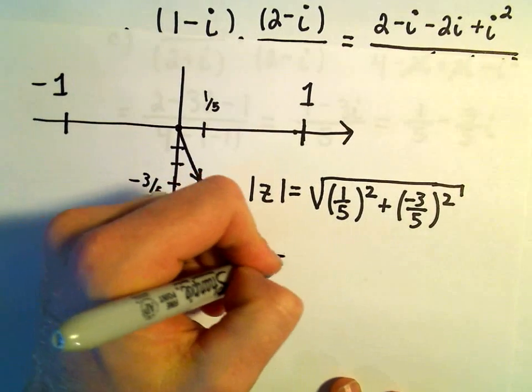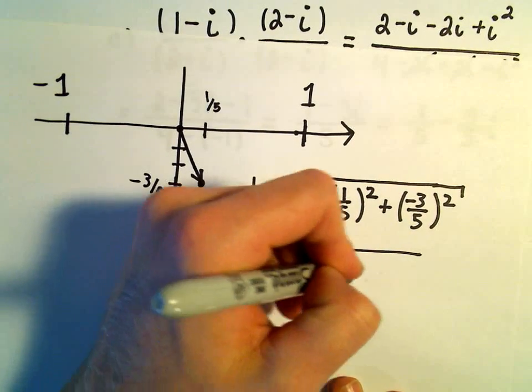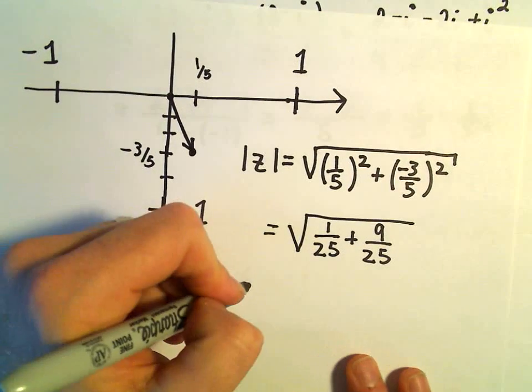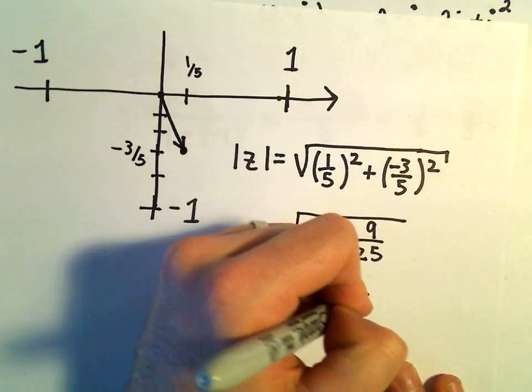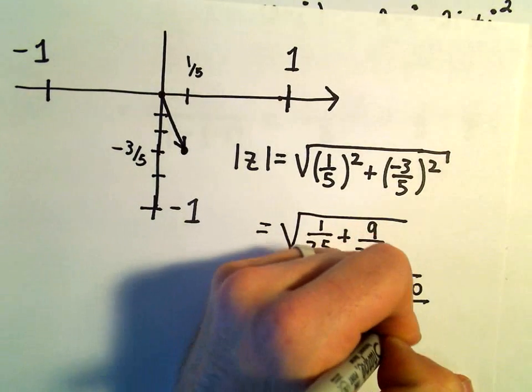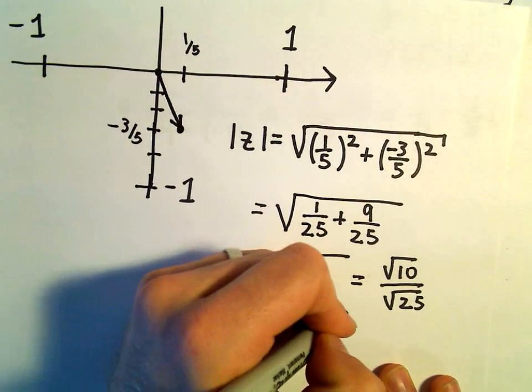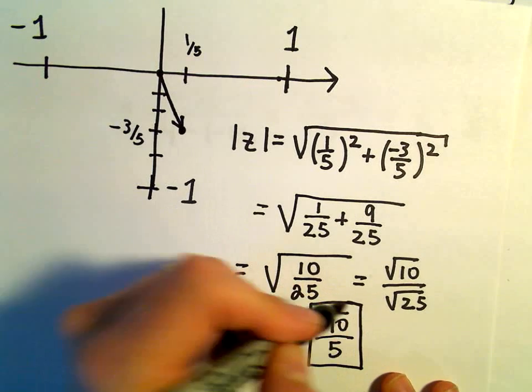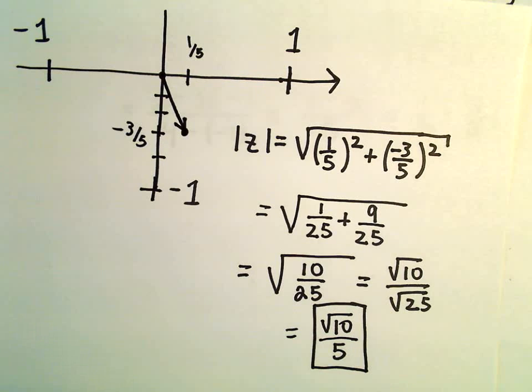And now just a little bit of arithmetic. So we'll get 1 over 25 plus 9 over 25 when we square everything. That will give us 10 over 25, but we can rewrite this as the square root of 10 over the square root of 25, which would just simply reduce down to the square root of 10 over 5. And we can't really simplify the square root of 10 any further, so I think I would leave it right there. So we would say the modulus of this complex number is root 10 over 5.